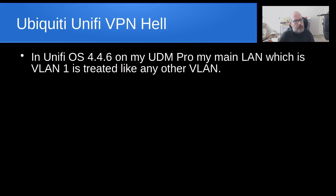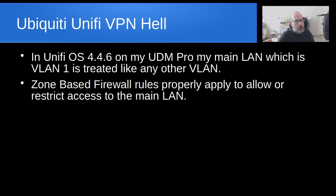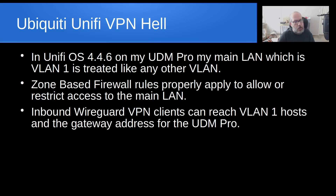In UniFi OS version 4.4.6 on my UDM Pro, my main LAN, which is VLAN 1, is treated like any other VLAN. 4.4.6 is the current and latest version of UniFi OS on a UDM Pro as of December 2025. Zone-based firewall rules properly apply to allow or restrict access to that main LAN. And if you've not yet updated to the zone-based firewall, the same thing can be said of the legacy firewall as well. So inbound WireGuard VPN clients can also reach VLAN 1 hosts and the gateway address for the UDM Pro.